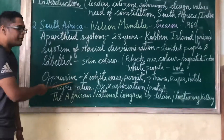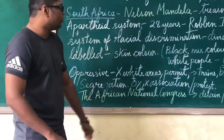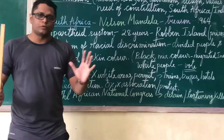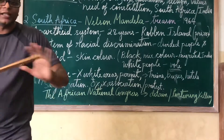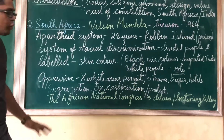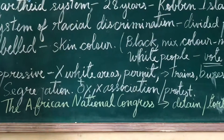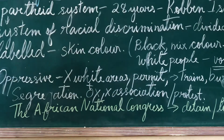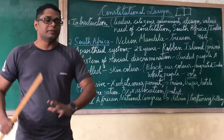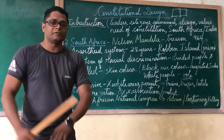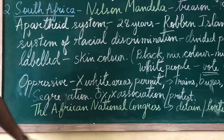These people experienced a lot of oppression. White people were the only ones allowed to vote. Black people, mixed-color people, and Indians were not allowed to vote. There were areas called white areas where only white people had a permit to go. Black people, mixed-color people, and Indians were not allowed in those areas.